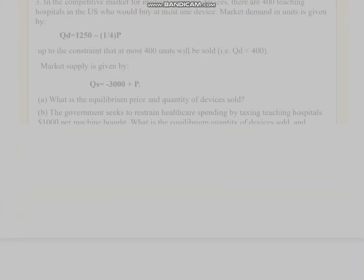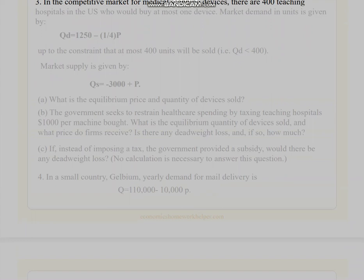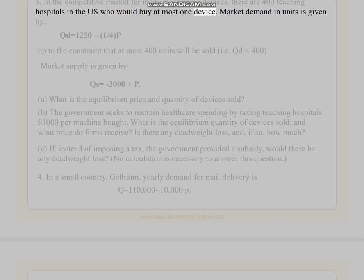3. In the competitive market for medical scanning devices, there are 400 teaching hospitals in the U.S. who would buy at most one device. Market demand in units is given by QD = 1,250 - 1/4 P up to the constraint that at most 400 units will be sold, i.e. QD < 400.